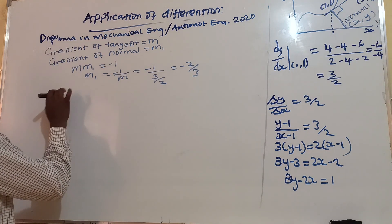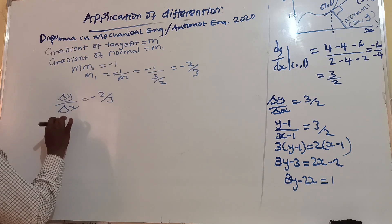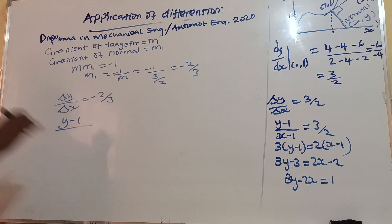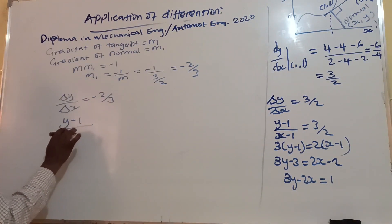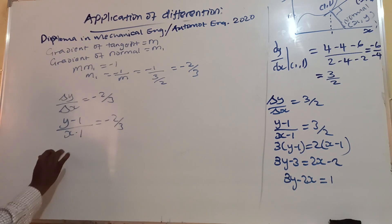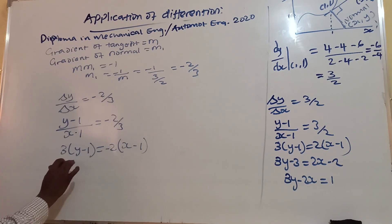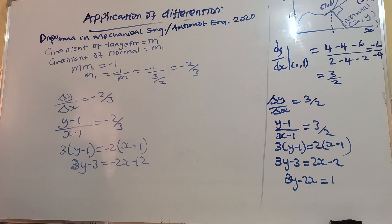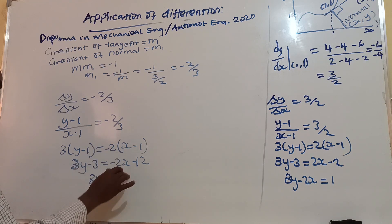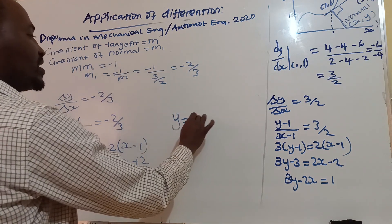The gradient of the normal is negative 2/3. Using the point (1, 1): (y minus 1) over (x minus 1) equals negative 2/3. Cross-multiplying: 3(y minus 1) equals negative 2(x minus 1), giving 3y minus 3 equals negative 2x plus 2, so 3y plus 2x equals 5. This can also be expressed as y equals nx plus c.